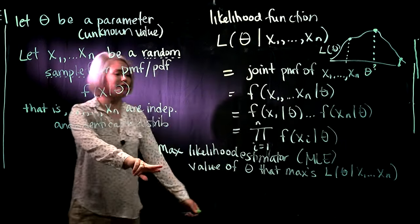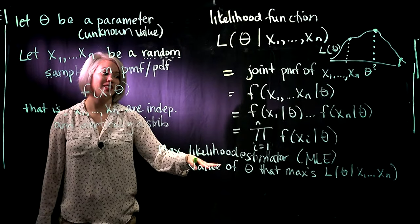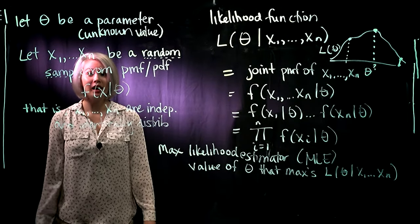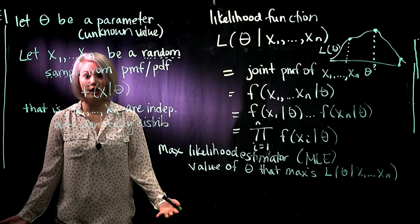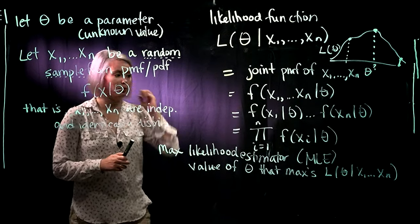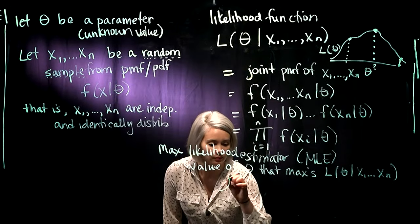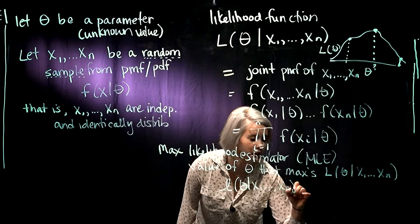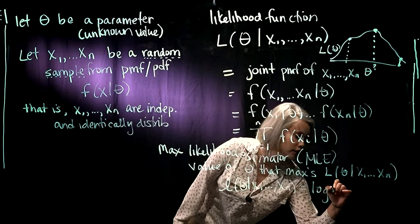So we're looking for this maximum likelihood estimator, and that's the maximizer of our likelihood function. And remember that log is a monotone function. So lots of times, actually, we'll be talking about the log likelihood. And that's just the log of the likelihood function.